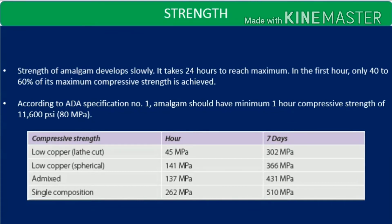The next property of amalgam is strength. Strength of amalgam develops slowly; it takes 24 hours to reach the maximum value. In the first hour, only 40 to 60% of its maximum compressive strength is achieved. According to American Dental Association specification number 1, amalgam should have a minimum one-hour compressive strength of 11,600 PSI, that is up to 80 megapascal.